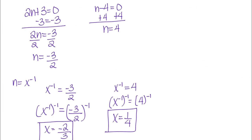Solving for n: we get n equals negative 3 halves and n equals 4. Remember, once we've solved for n, we're not done — we need to go back and plug in for x. So we have x to the negative 1 equals negative 3 over 2, and x to the negative 1 equals 4. To undo x to the negative 1, we raise everything to the negative 1 power, which by the product property gives x to the 1, or just x. Raising to the negative 1 power is the same as taking the reciprocal, so x equals negative 2 thirds and x equals 1 fourth.